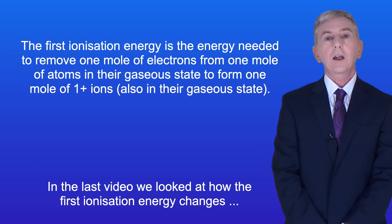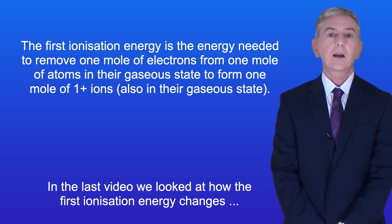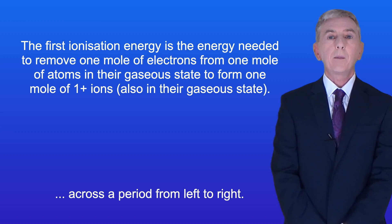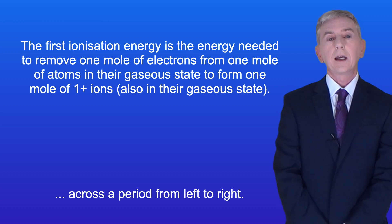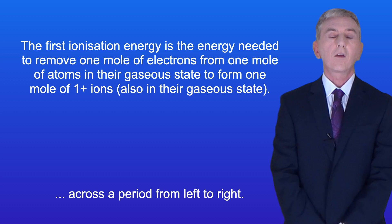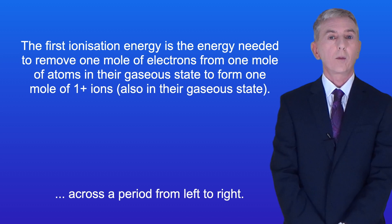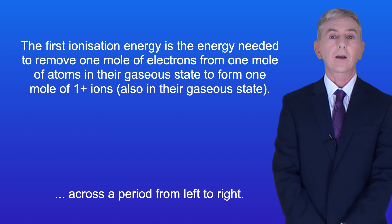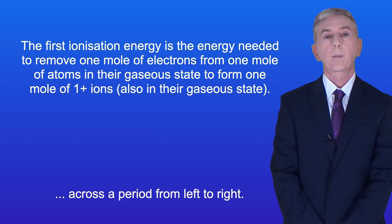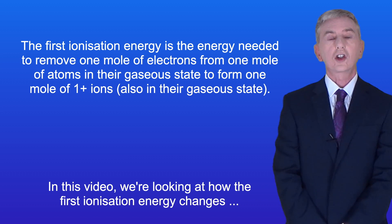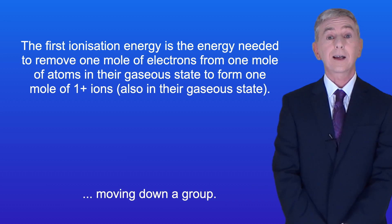In the last video, we looked at how the first ionization energy changes across a period from left to right. Remember that the first ionization energy is the energy needed to remove one mole of electrons from one mole of atoms in their gaseous state, to form one mole of one positive ions also in their gaseous state. In this video, we're looking at how the first ionization energy changes moving down a group.